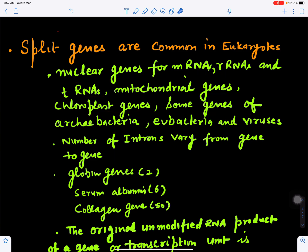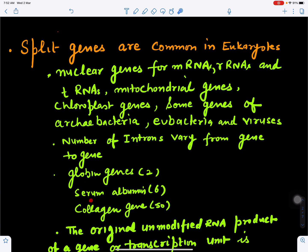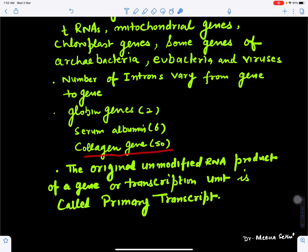The number of introns will vary from gene to gene. Some genes like the globin gene may have only two introns, serum albumin can have six introns, and the collagen gene can have up to 50 introns.